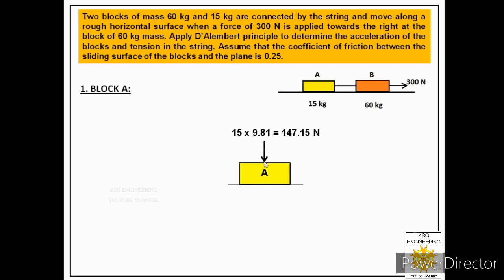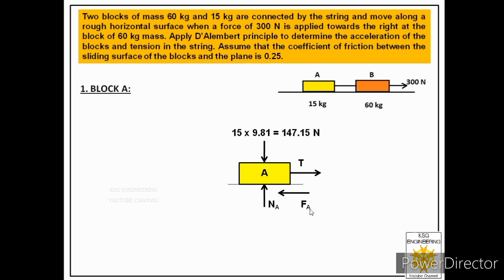We show the weight of block A in the downward direction. After this, we show the normal pressure acting on the block provided by the surface, labelled as NA. A string is connected to block A which is pulled by block B towards the right, so we show tension T acting towards the right. Since the surface is rough and block A moves towards the right, friction force FA acts towards the left.